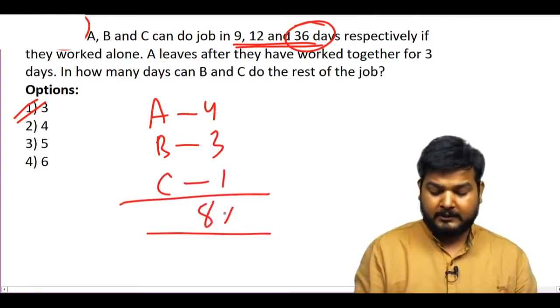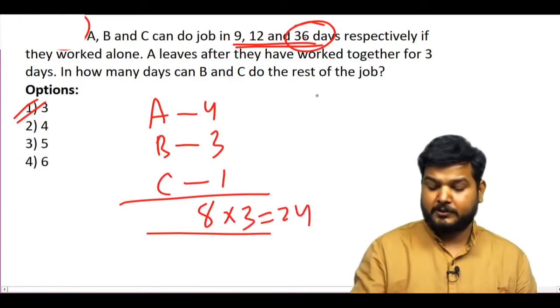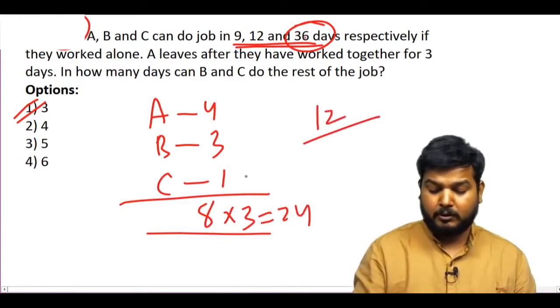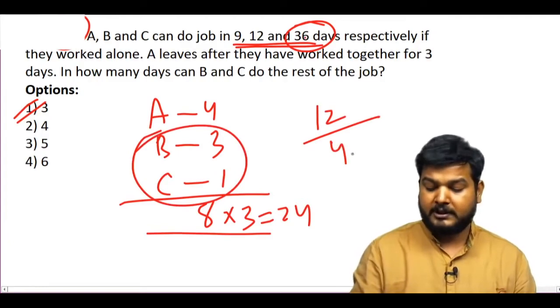So, you can add them, 8. Three days they work, 24. Total work is 36 units, how much is left? 12 units. Who will do it? B and C is 4. How much will it be? 3.